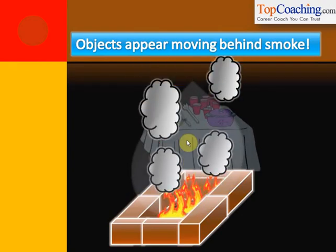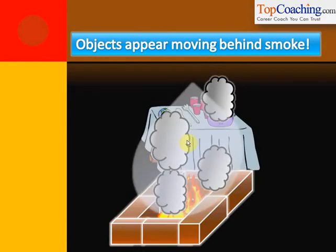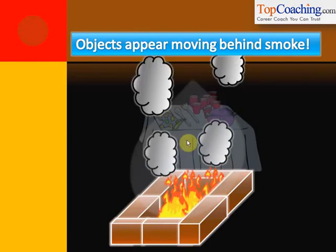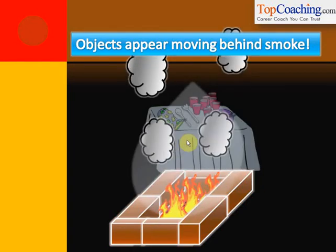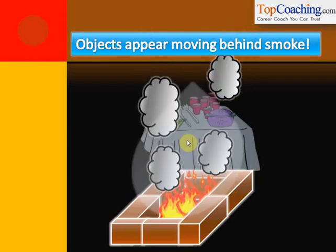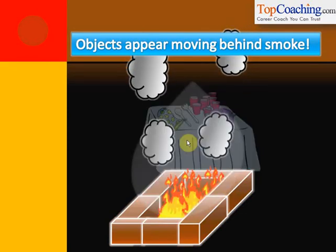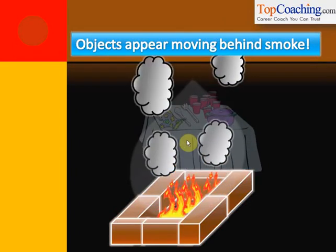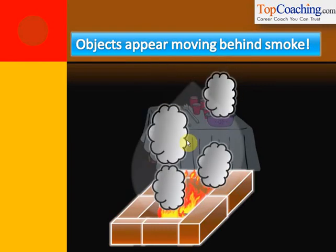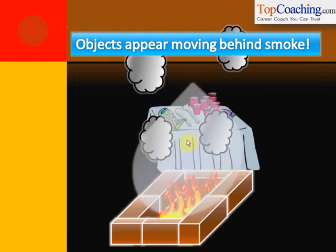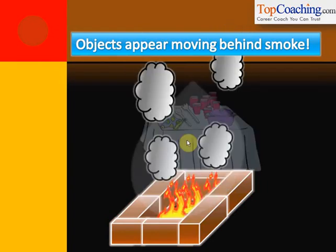So basically, two things are happening. One: the changing refractive index of smoke makes objects behind the smoke appear to be moving. Two: the objects anyway appear at a different position because the refractive index of hot air is less than that of cold air, so the image formed by light rays through hot air is at a different position compared to the image through cold air. This was one small day-to-day example related to refraction.